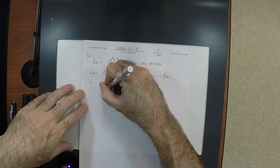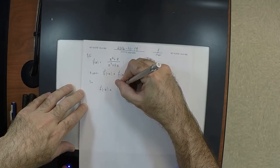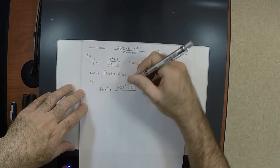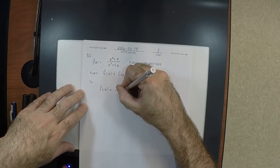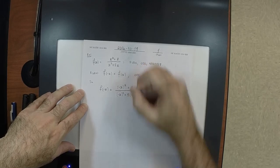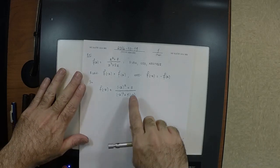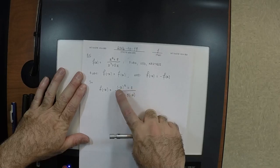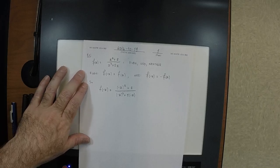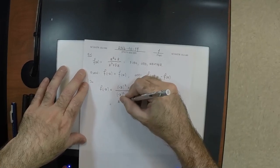So in either case, we want to figure out: does it satisfy f of negative x equals f of x, or f of negative x equals negative f of x, or neither? To address the question, we need to see what happens if we switch x's for negative x's. So f of negative x — we substitute negative x into every position where there's an x. So negative x squared, then plus 8, and then negative x cubed, and then plus 5 times negative x. In the numerator, the 8, nothing happened to it. How about negative x squared? The negative squares away, so that would be x squared plus 8.